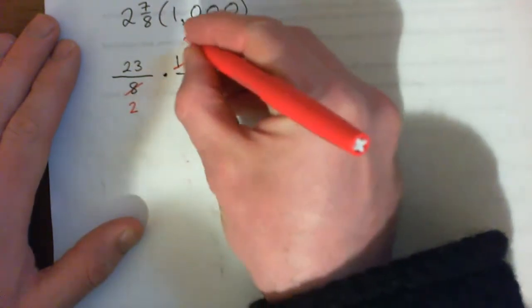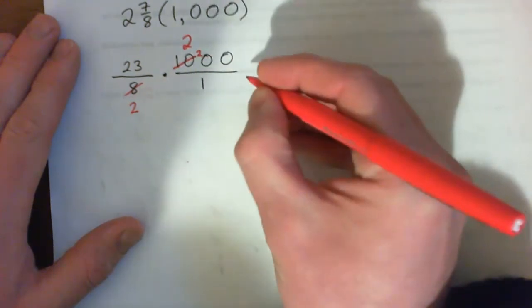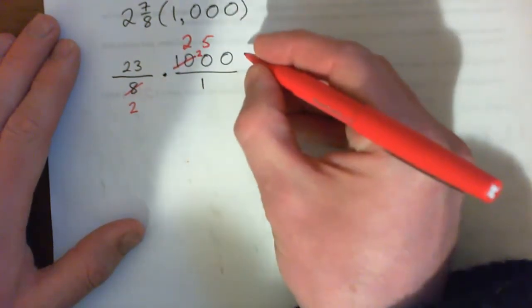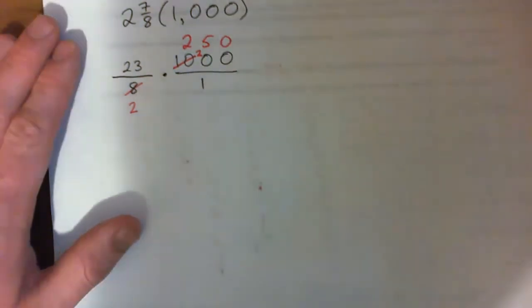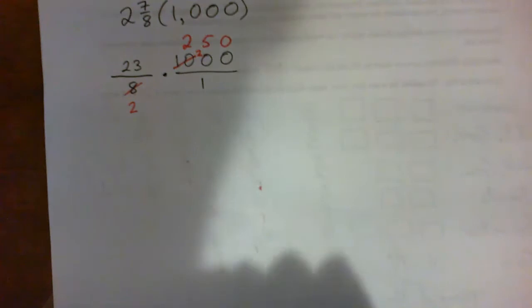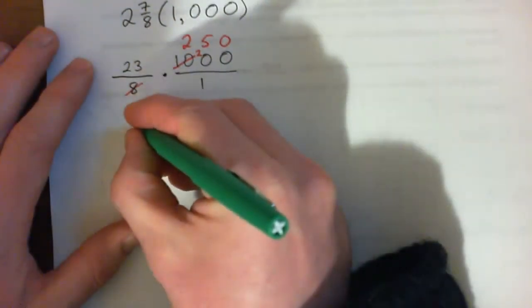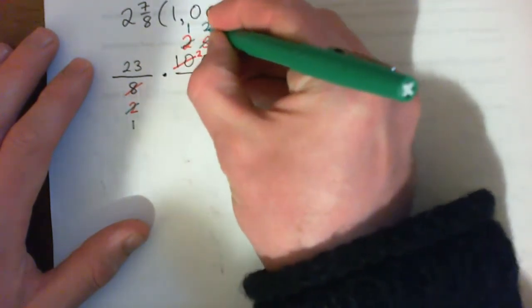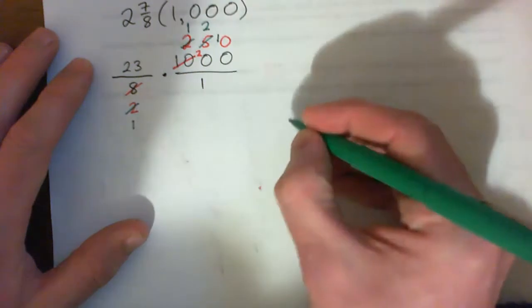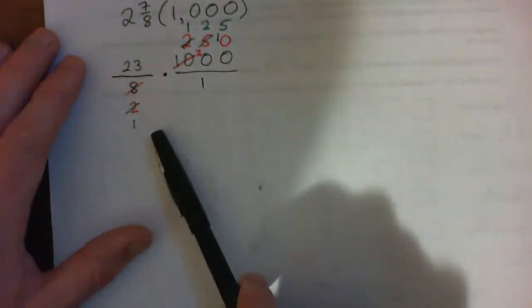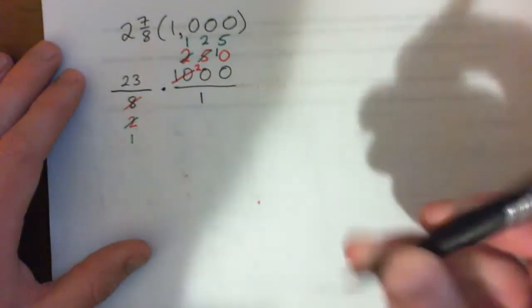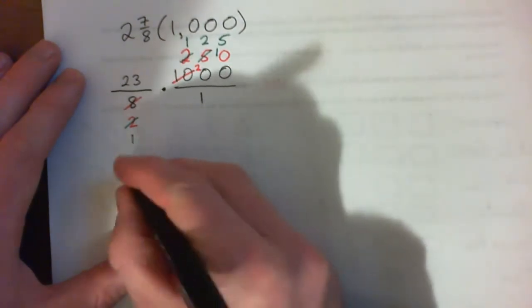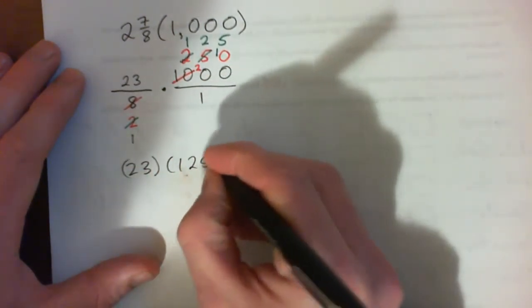Four into ten goes two times remainder two; four into twenty goes five times; four into zero goes zero times. Now we can cross cancel again: two into two goes once; two into five goes two times remainder one; two into ten goes five times. So we have 23 over one times 125 over one, so that's just 23 times 125.